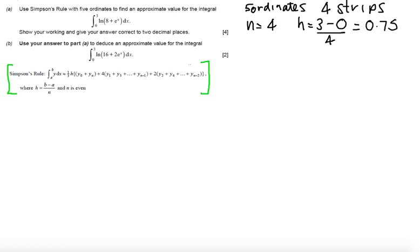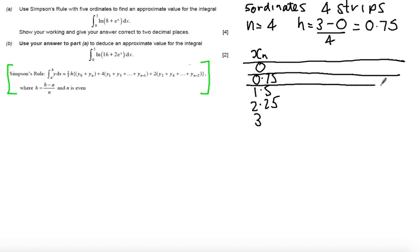So what I want to know at this point is I want to actually find values of my ordinates. We're going to have x_n down the side. So we start at 0, we're going to have 0.75, 1.5, 2.25 and 3. I'm just trying to draw out a table as neat as possible.